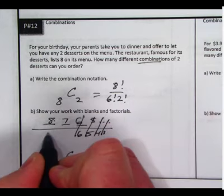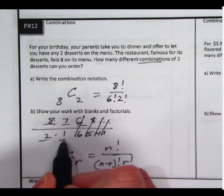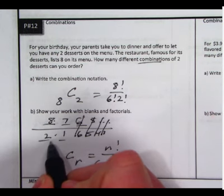We haven't used this 2 factorial yet. 2 factorial is 2 times 1, so realistically, it's just 8 times 7 over 2 times 1. 8 times 7 is 56 divided by 2 is 28.